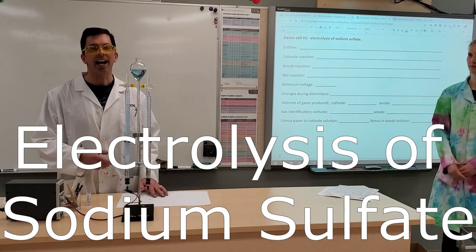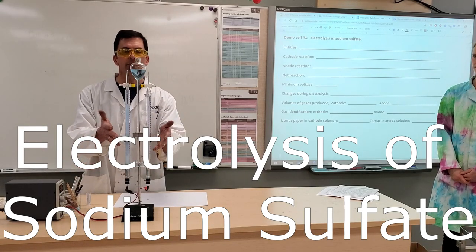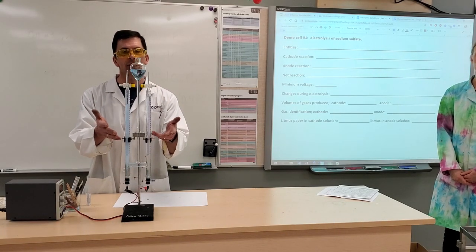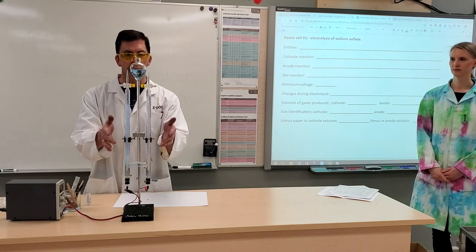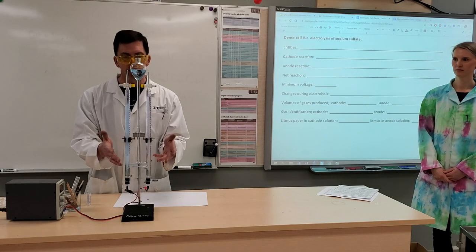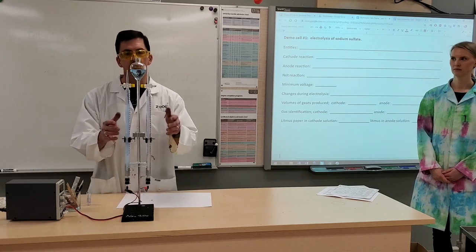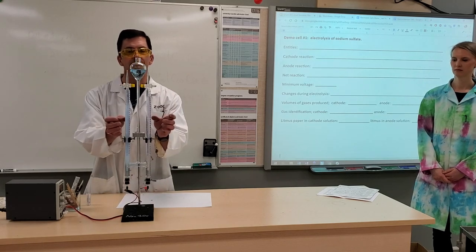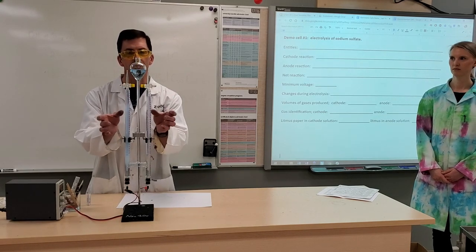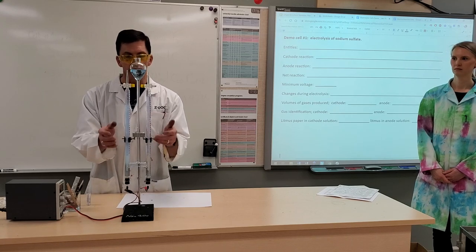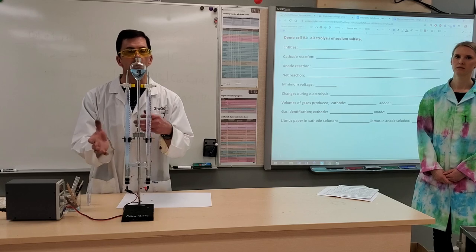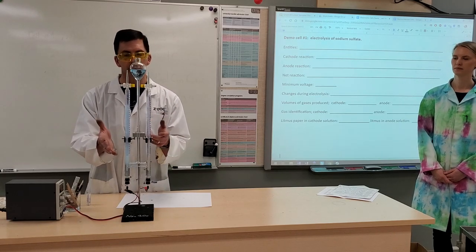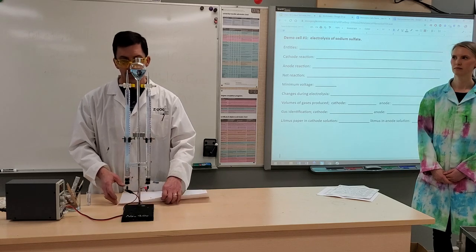We're back with Hoffman's apparatus. This is another design for an electrolytic cell. Here we have an H-shaped glass tubing. And this allows us to collect gases at the cathode and anode in separate compartments. Notice that in both of our designs for electrolytic cells, there is no salt bridge or porous cup.